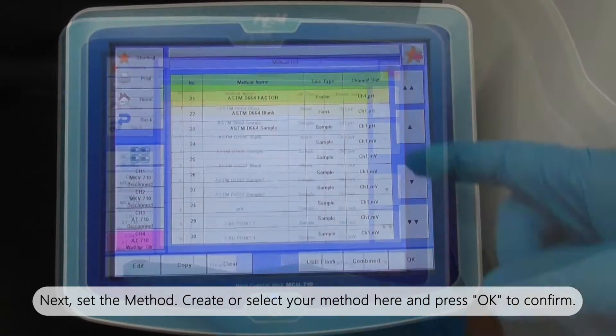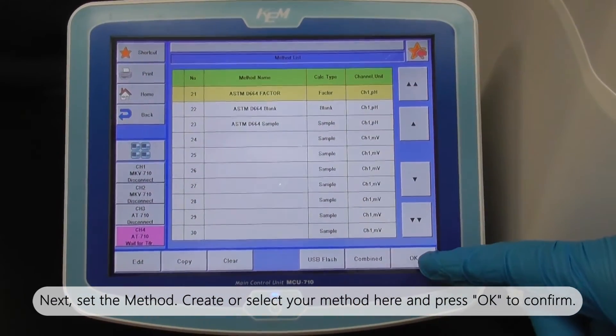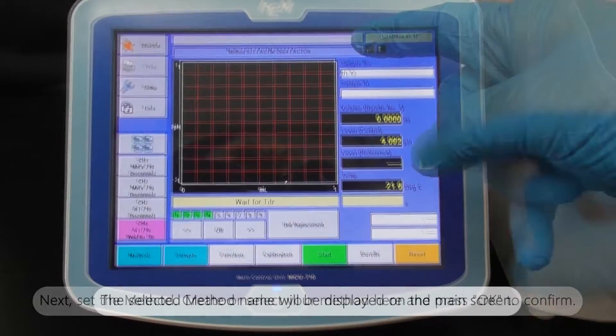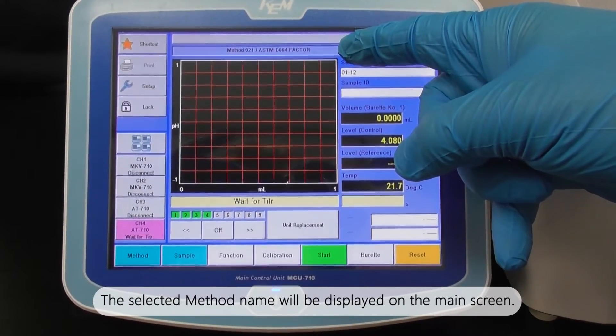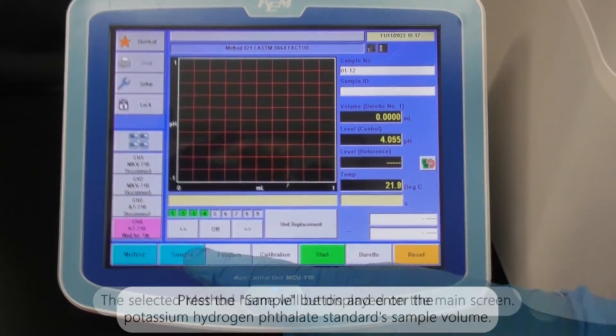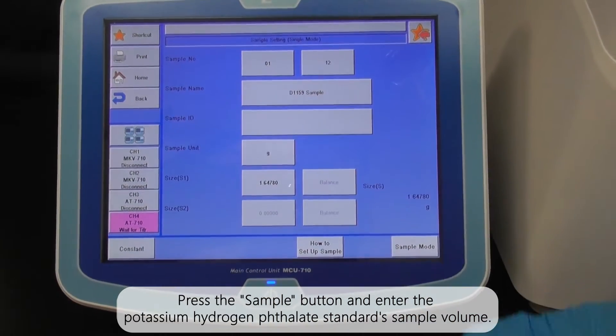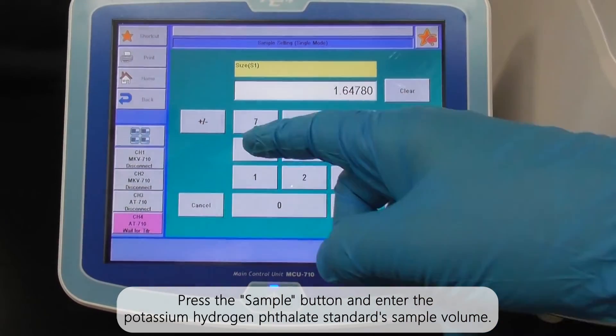Next, set the method. Create or select your method here and press OK to confirm. The selected method name will be displayed on the main screen. Press the sample button and enter the potassium hydrogen phthalate standard sample volume.